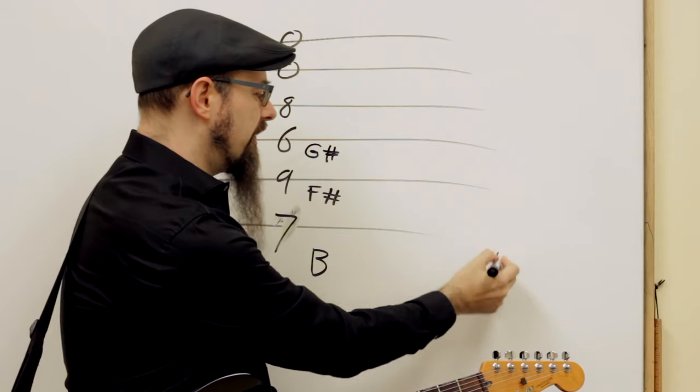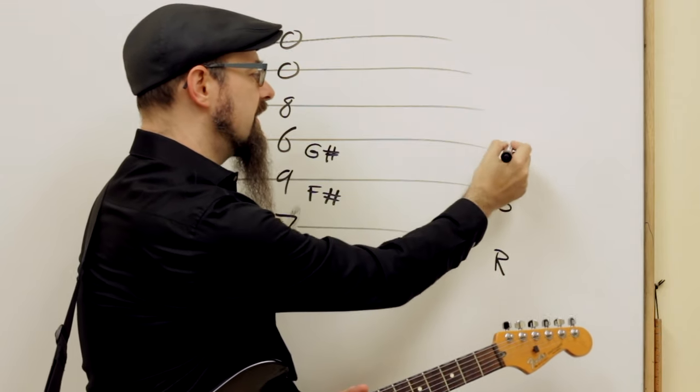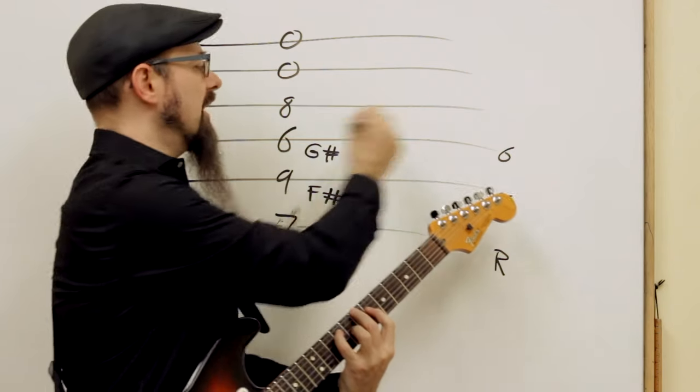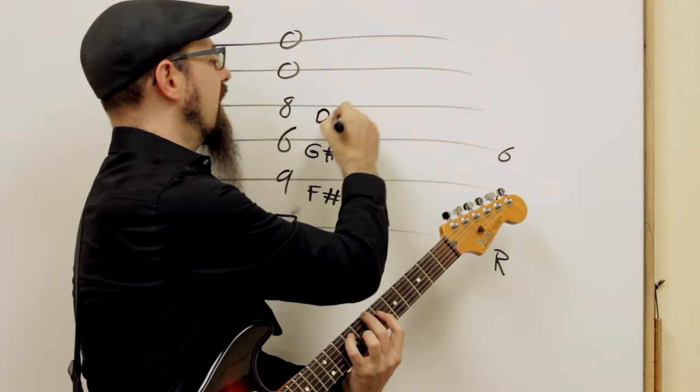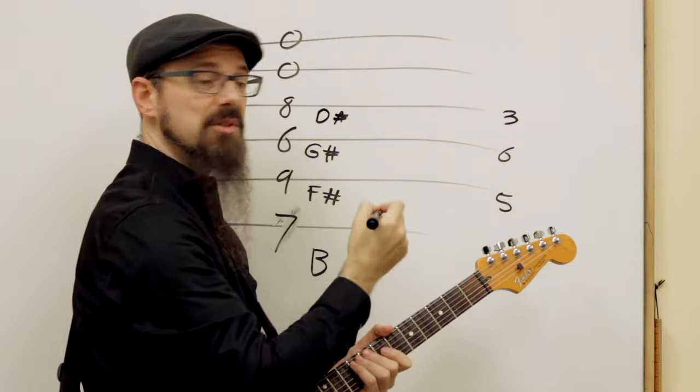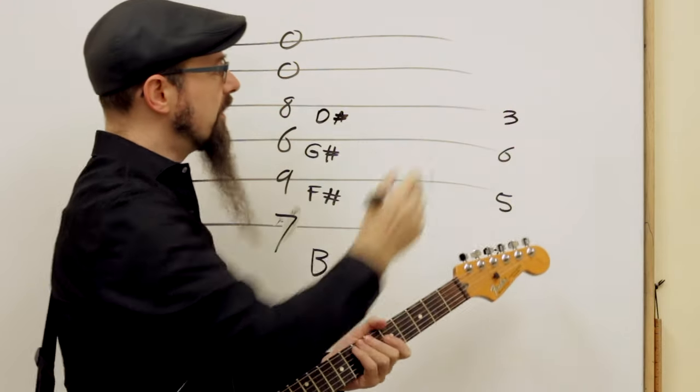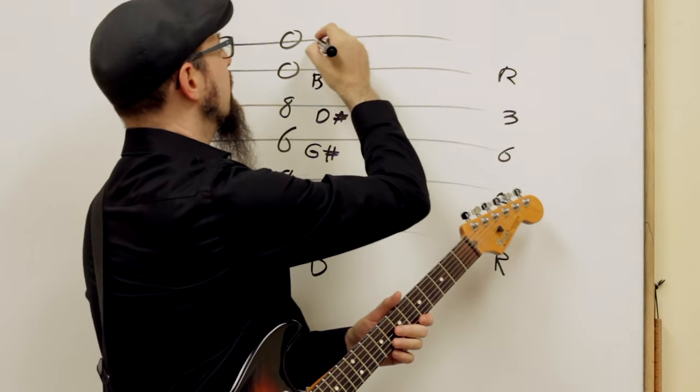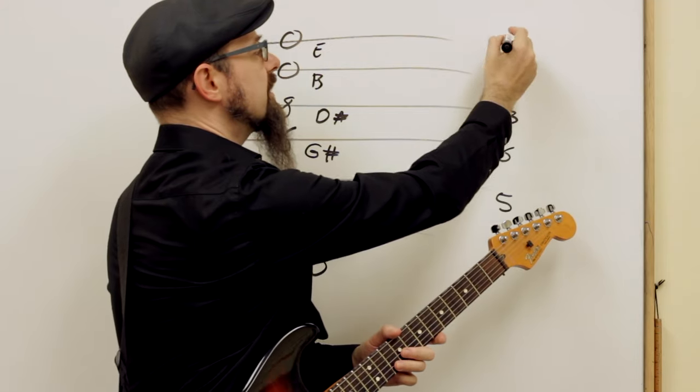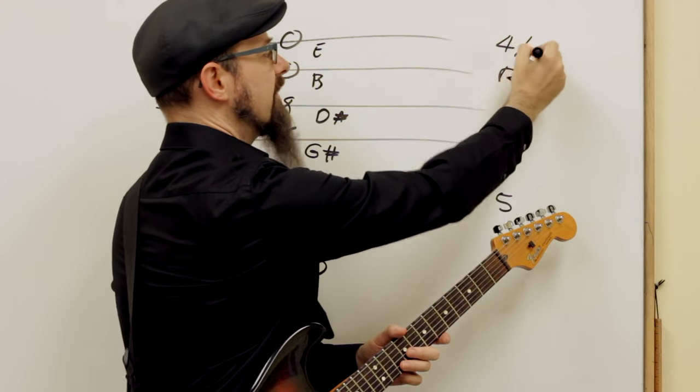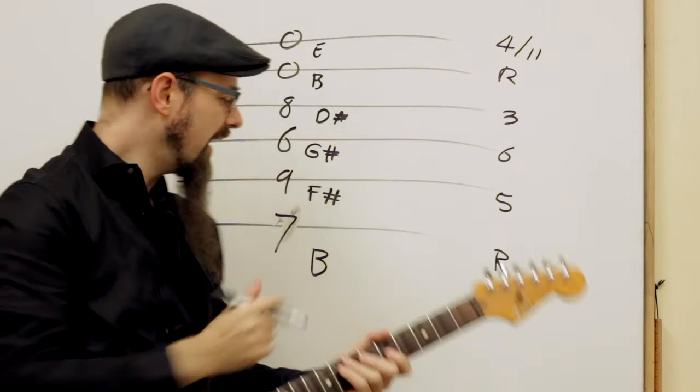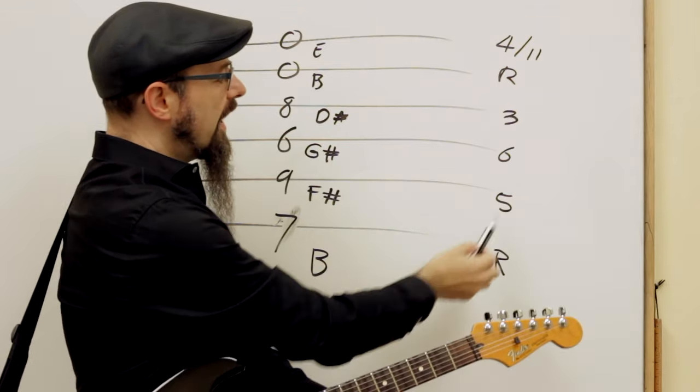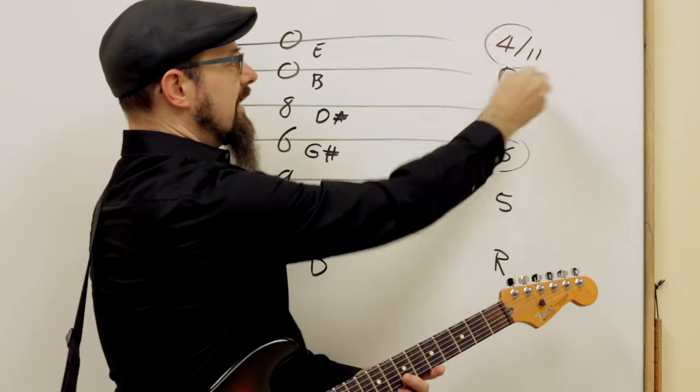This G sharp is the 6th of the chord. So again, if I write them as the root note, the 5th, the 6th. This 8th here is a D sharp, and that's the major 3rd of the chord. So it's a major chord. Then we have another B open string, which is the root again. And then we have this E note open string, which is the 4th, or the 11th, depending how you wanna write it.